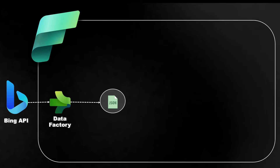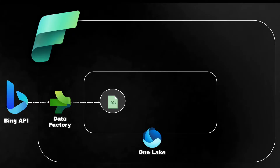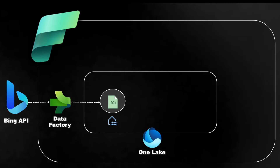Now let's talk about where this JSON file gets saved in Fabric. We will be using something called OneLake within Fabric. OneLake is a one-stop storage solution for Microsoft Fabric, which is kind of similar to Azure Data Lake. Inside OneLake, we can create different kinds of databases such as Lake Database, Data Warehouse, or Custom Database. For this project, we will be using Lake Database to store the raw JSON file. So as part of the data ingestion step, Data Factory connects to Bing API and ingests the latest news data as a JSON file format to the Lake Database inside OneLake.